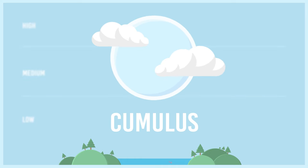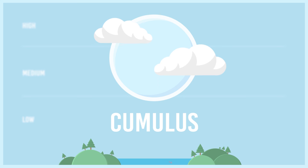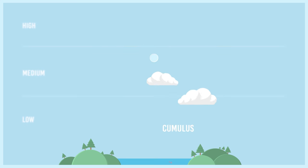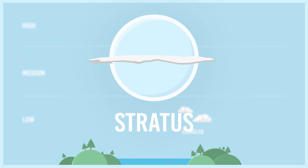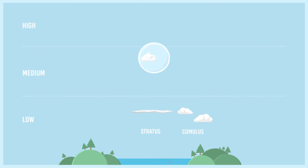Cumulus — probably the most recognizable cloud, meaning heap or pile in Latin. They appear like puffy cotton balls with a flat bottom that you would normally see floating by on a nice day. Stratus means layer in Latin. They are a low, featureless, hazy cloud that blankets the sky that you would see on a grey overcast day. When stratus is on the ground, it is known as fog.